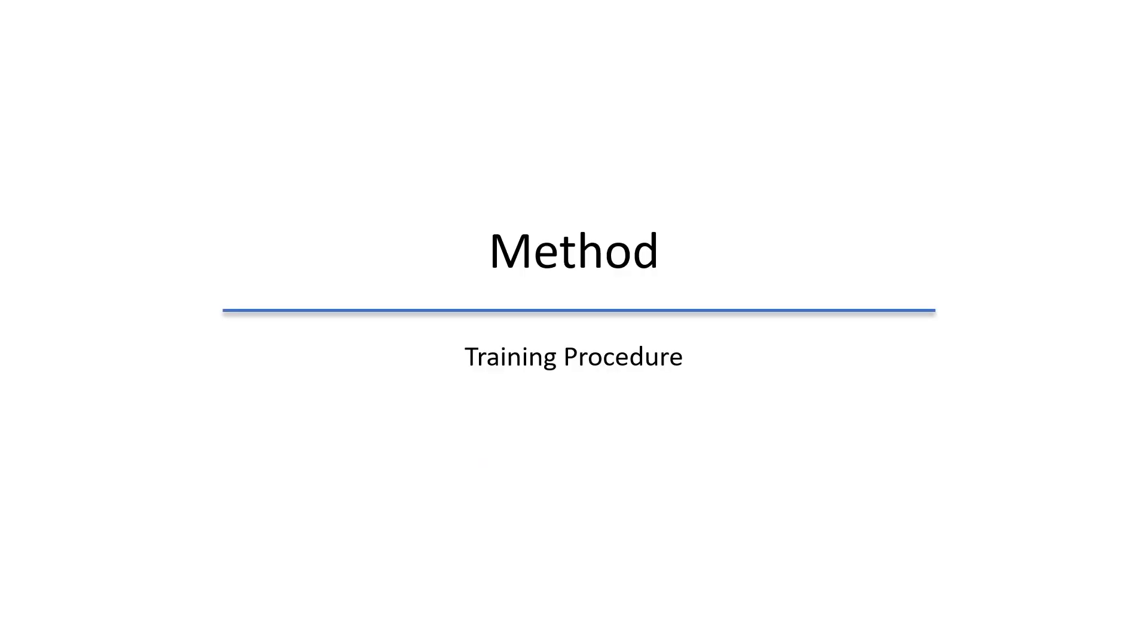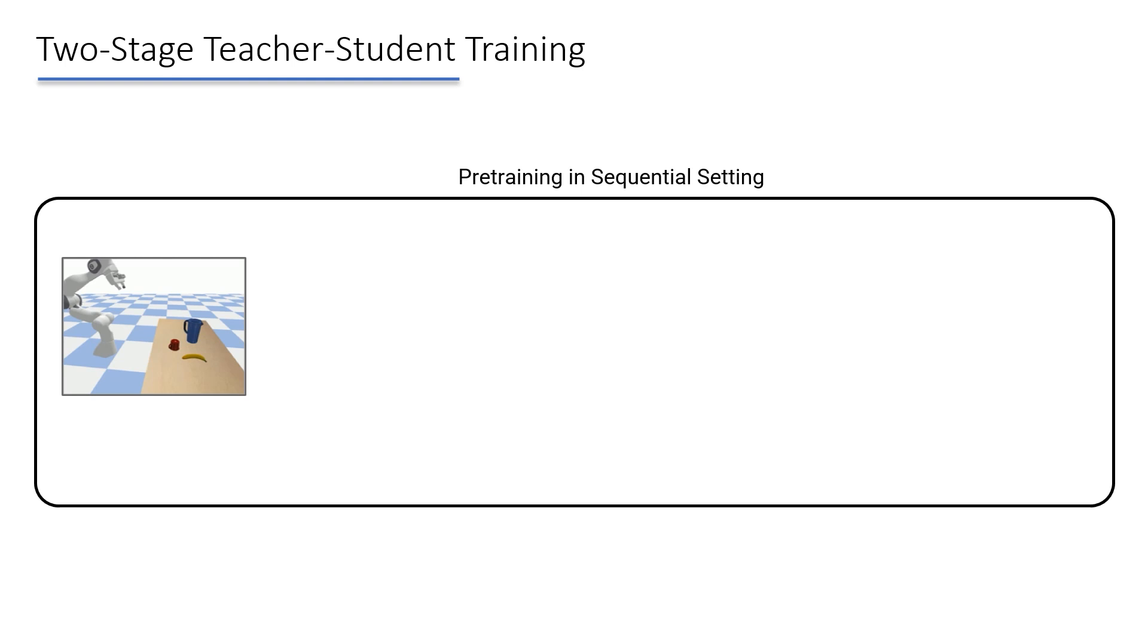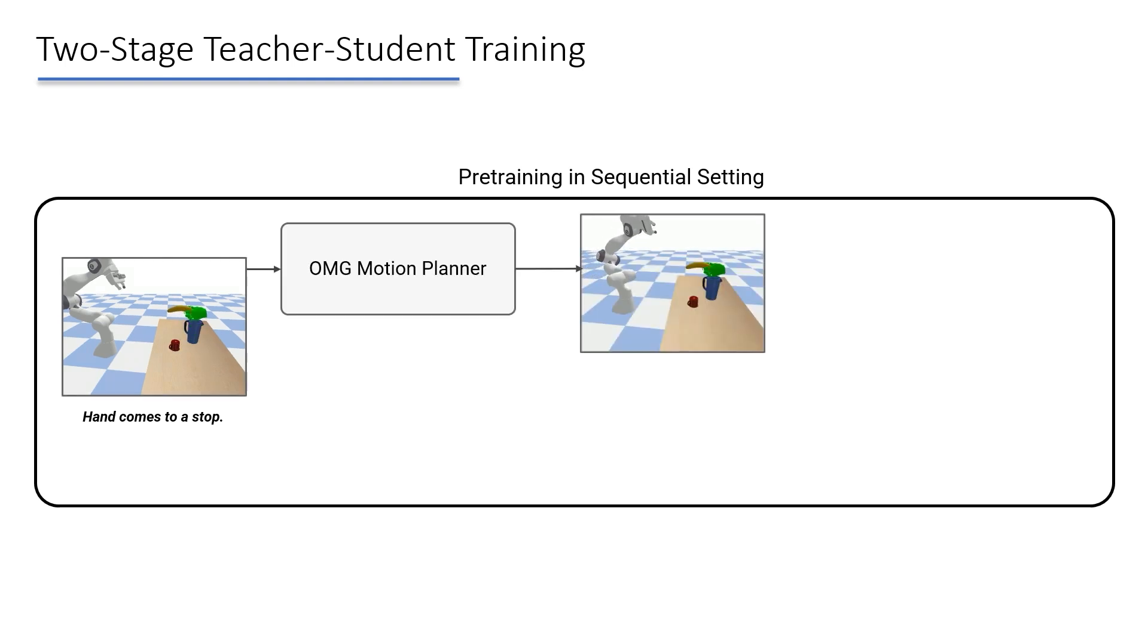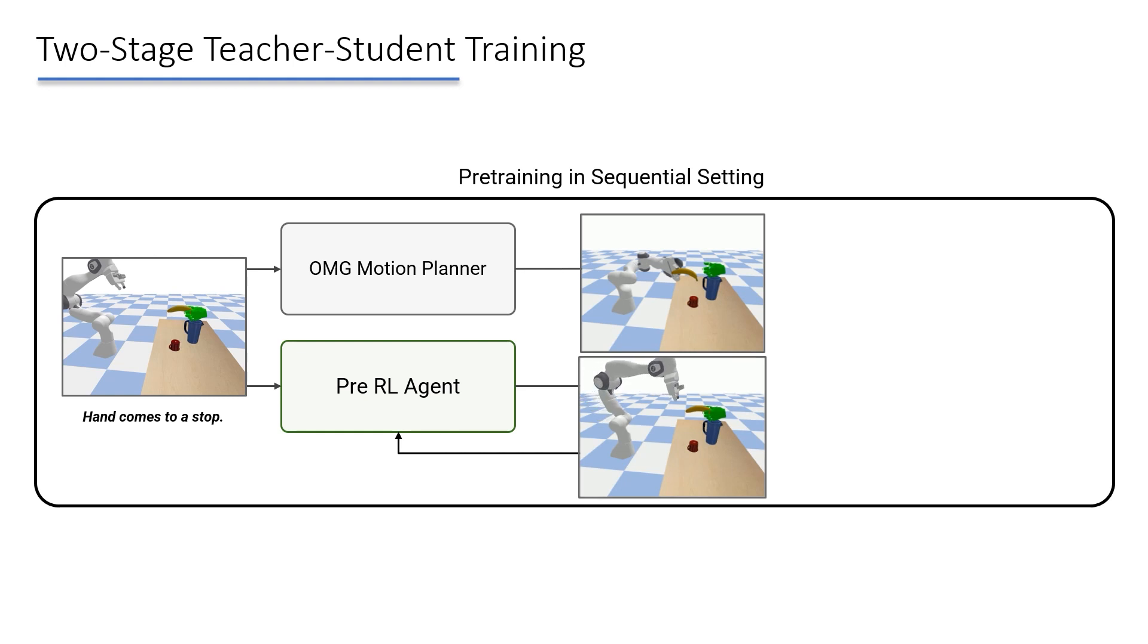Our approach introduces a two-stage teacher-student training procedure. In the first stage, we assume that the human hand has come to a stop before the robot starts moving. We then collect expert demonstrations with an open-loop motion and grasp planner. We also gather experiences with our RL agent. The experience transitions from the physics simulation are pushed into a replay buffer that will be used for training.